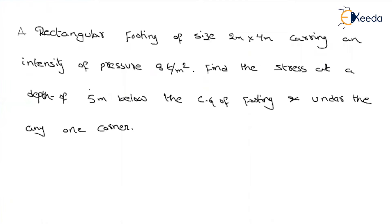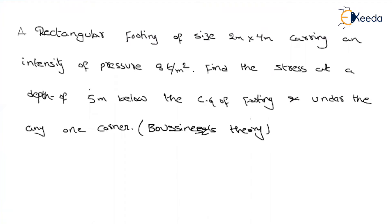The intensity is given, the size of the footing is given, and they are asking us to find stress at two different points: one under the CG of the footing and another at any one corner. We are asked to find this using Boussinesq theory. In the exam, unless it is mentioned as a stratified or warped layer, we can use any theory — Boussinesq or Westergaard.